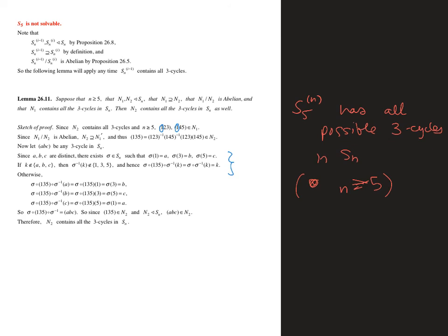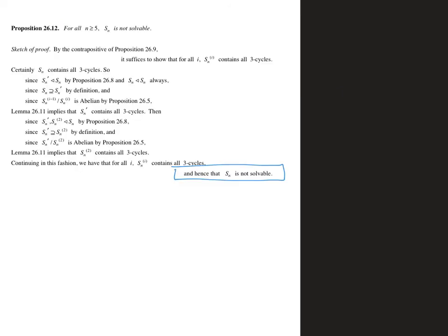So what this tells us about S5^(n) — where we're taking the n-th commutator subgroup — is that it's never going to be the identity. That's the punchline. We've got that Sn is not a solvable group if n is at least five.